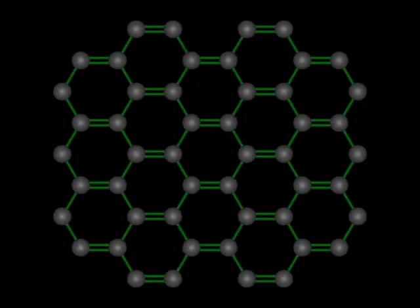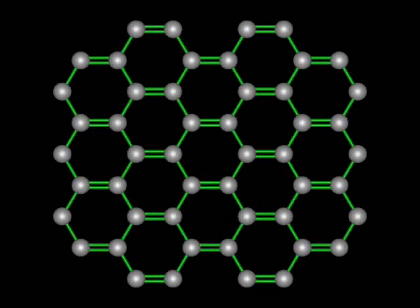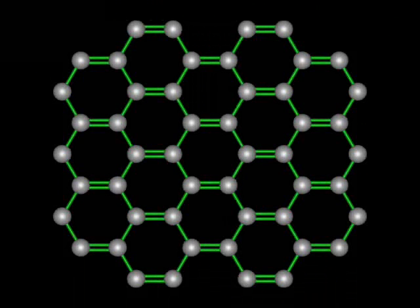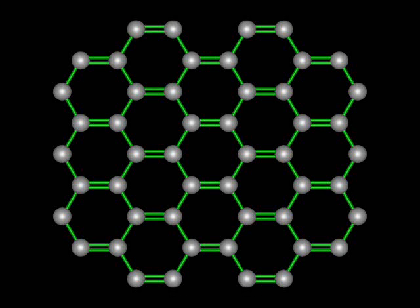Graphite is quite different from diamond and Lonsdaleite. In the graphite structure, each carbon is connected to only three atoms. Since carbon must always form four bonds, one of the three bonds must be a double bond, giving an average bond order of 1.33.